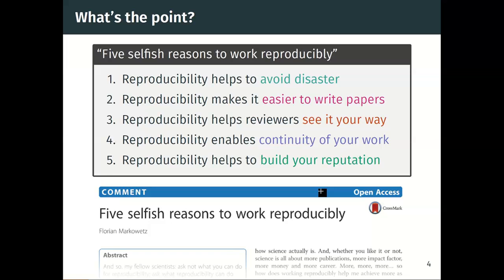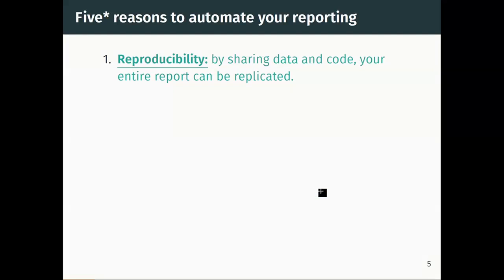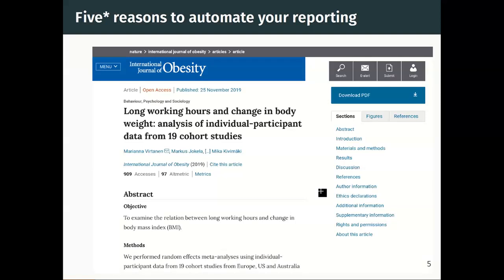Why are we here? There is a very nice paper listing reasons to work reproducibly, including things like helping people see your work, reputation, and continuity. The biggest reason on this list is definitely reproducibility. We want to share our code and data with someone so they can hit the same button we did, see how all results were generated, and zoom in on a particular number to see exactly how it was calculated.